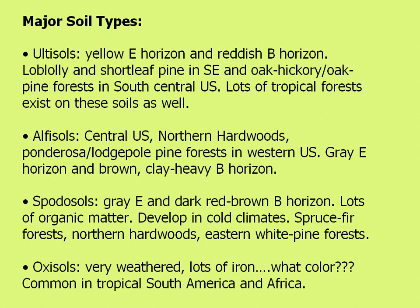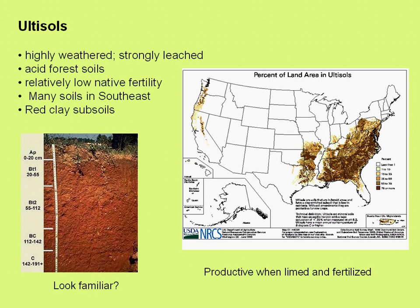Ultisols are found primarily in the eastern United States. They are very highly weathered and strongly leached — the Appalachian mountain chain is a very old, weathered mountain chain, and thus many of its soils have low native fertility. However, once fertilized, their good clay content allows them to hold nutrients and become very productive. A large percentage of southeastern forests grow on Ultisols.